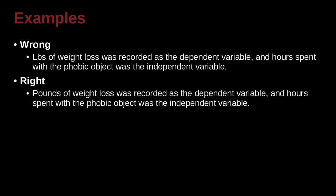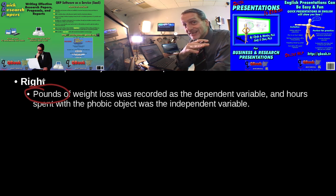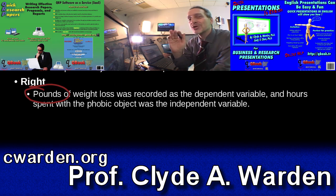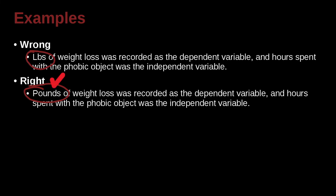Pounds of weight loss was recorded as the dependent variable and hours spent with the phobic object was the independent variable. Here we have this problem that I love to point out. This is really a biggie. At the beginning of a sentence, do not use abbreviation. Let me repeat this. At the beginning of a sentence, do not use abbreviation. Never. It is totally wrong. People love to do it. It's easy to do, especially when you're editing, you move things around. Do not do it. So here we're going to spell out the word pounds.